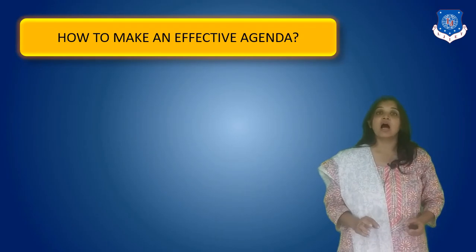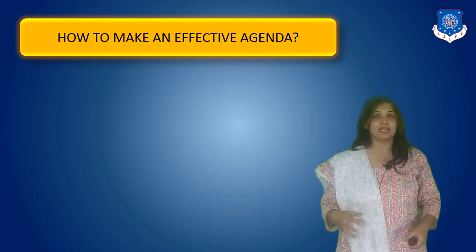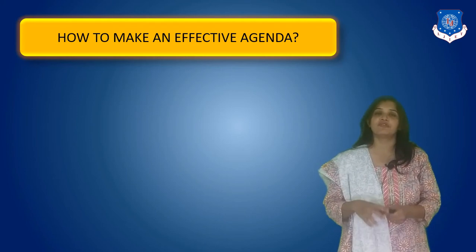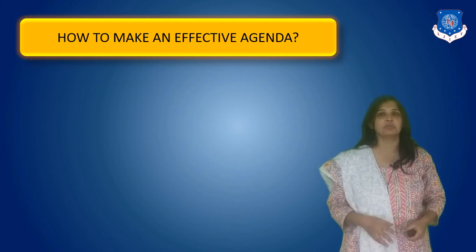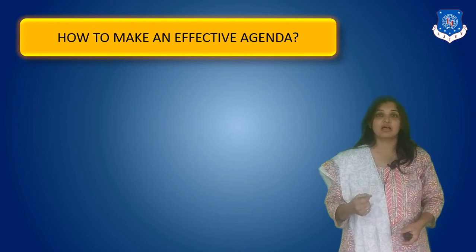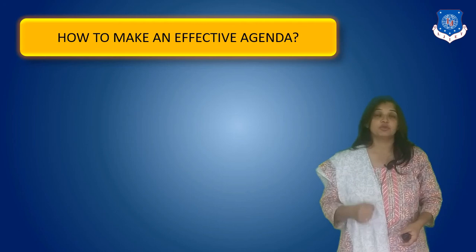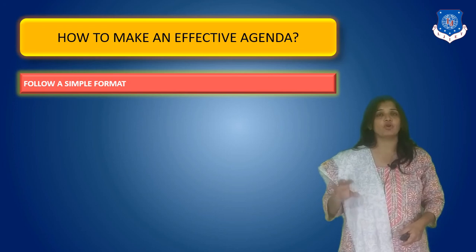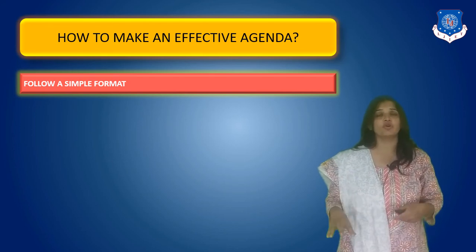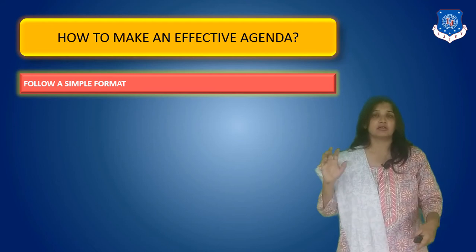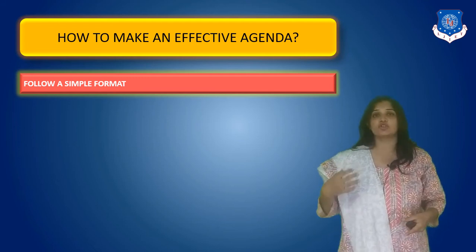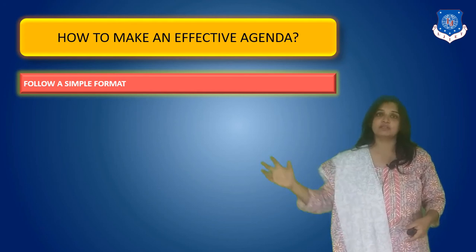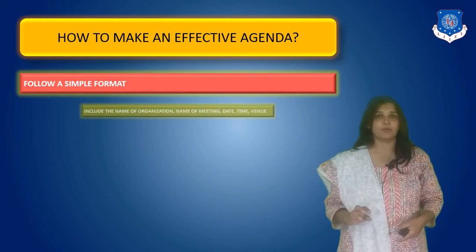Now let us see how to write an effective agenda. Agenda seems to be a very simple document, but there are fine points that need to be taken care of. First of all, always follow a simple format. In writing an agenda we do not follow a complicated format like a technical report or a proposal — it is just a list of topics. Give numbers to the topics and write down the list along with the timings. There is no need for any complicated format.